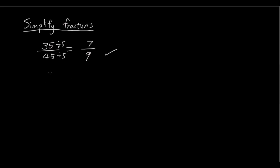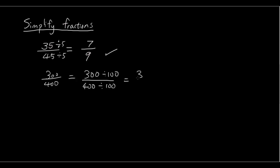Let's try simplifying three hundred over four hundred. If you think of a number that divides both, that number is one hundred. Three hundred divided by one hundred is three, and four hundred divided by one hundred is four — giving us three over four. In order to simplify fractions, make sure you are dividing by the same number on both numerator and denominator until you reach the simplest fraction.